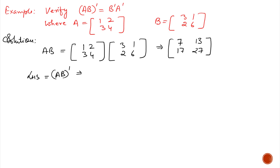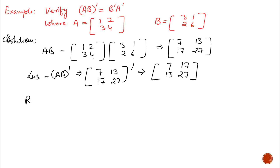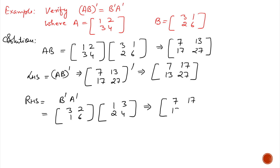The left-hand side is (AB)ᵀ. The transpose of the AB matrix gives 7, 17, 13, and 27. For the right-hand side, Bᵀ is 3, 2, 1, 6 and Aᵀ is 1, 3, 2, 4. After multiplying BᵀAᵀ we get 7, 17, 13, and 27. So we can confirm that (AB)ᵀ equals BᵀAᵀ.